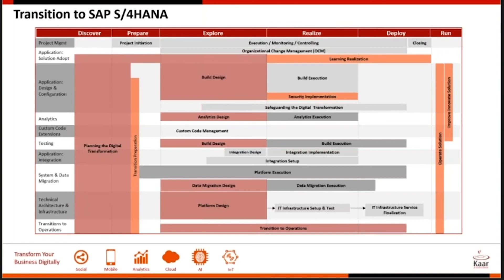When building your development and QA systems, it is recommended to freeze all development, remove open developments to review later, and overwrite the development system with copies of production. This helps in two ways: once you've gone live, your development and QA systems are very close to production, making support easier. Also, each mock run is performed on a copy of production, so when you do the final production run, the only difference is the transaction data that changed in between — avoiding unknown errors in the last phase.